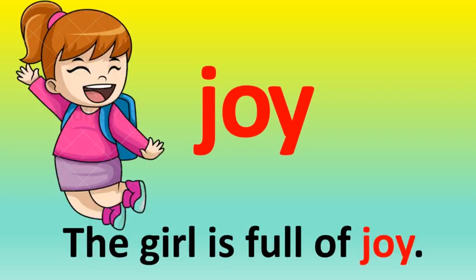We are going to say the phonic sound J. Let us see what happens when OI joins J — they become JOY. Now let us make a sentence and know the meaning of JOY. What does JOY mean? JOY means happiness. You can see this girl — she is happy, she is joyful. And the sentence where I have used this word JOY is: THE GIRL IS FULL OF JOY. You can easily understand she is jumping with joy.